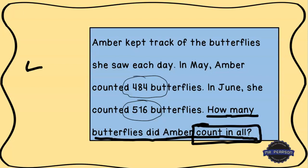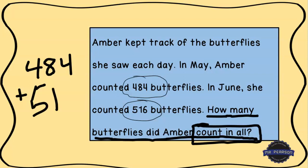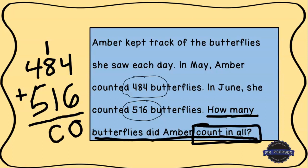We're going to take 484 plus 516 and add them up. Starting in the ones place: 4 plus 6 gives us 10, so I write a zero and regroup to the tens place. Then 1 plus 8 is 9, and 9 plus 1 gives us 10, so I put down another zero and regroup to the hundreds place.